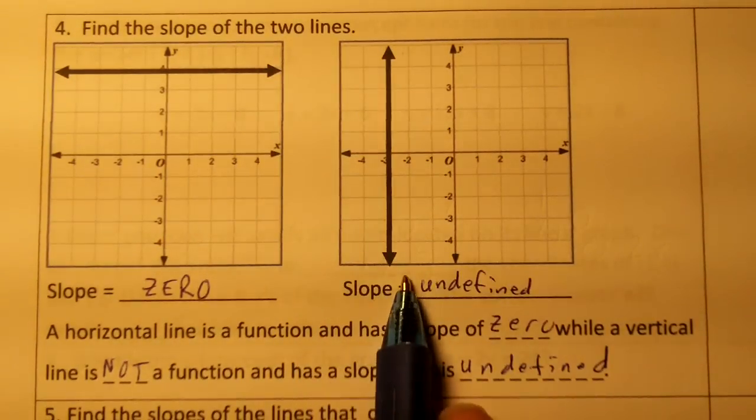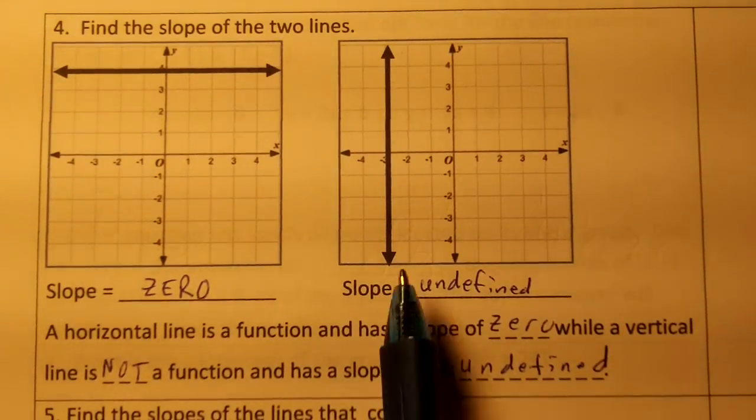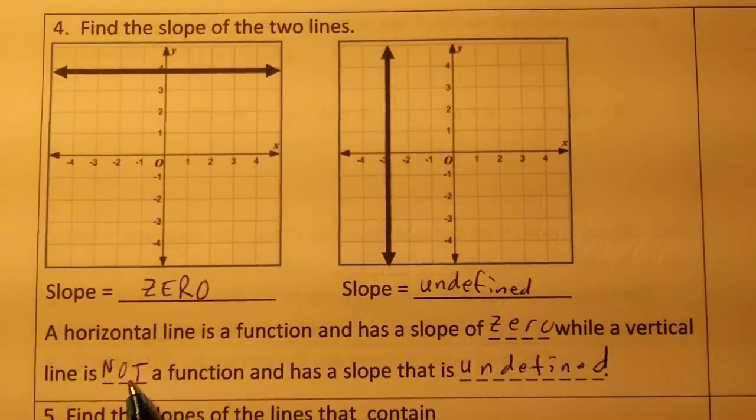This is a zero slope; this is an undefined slope. This is something you just have to have memorized and remember: an undefined slope would not be a function.